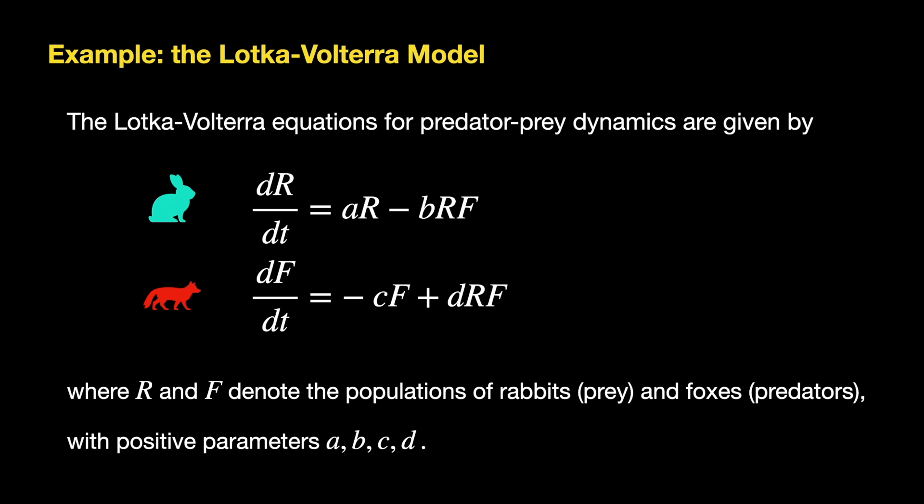Notice both rates of change depend on the other population, so you cannot separate them. We have four parameters in this system, named A, B, C, and D. The way this is written with the plus and minus signs all are non-negative. To understand the parameter A, we can imagine that in the absence of foxes, the rabbits grow exponentially. So A is like the natural growth rate of the prey in the absence of predation.